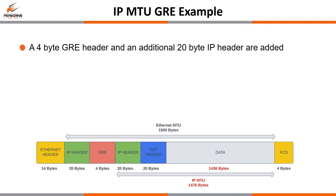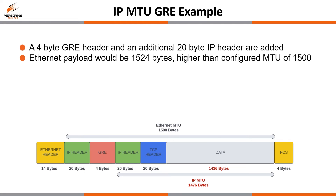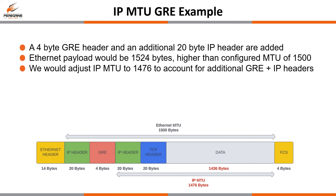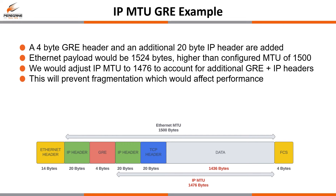Taking GRE as an example using default MTU values of 1500 bytes, fragmentation would be needed because when we add the 4-byte GRE header and an additional 20-byte IP header, the overall payload ends up being 1524 bytes, which exceeds 1500 bytes and therefore gets fragmented. The way to optimize the network in this case would be to reduce the IP MTU by 24 bytes to account for the additional GRE and IP headers. This ensures the 1500-byte MTU is not exceeded, prevents fragmentation, and in turn prevents a reduction in network performance.